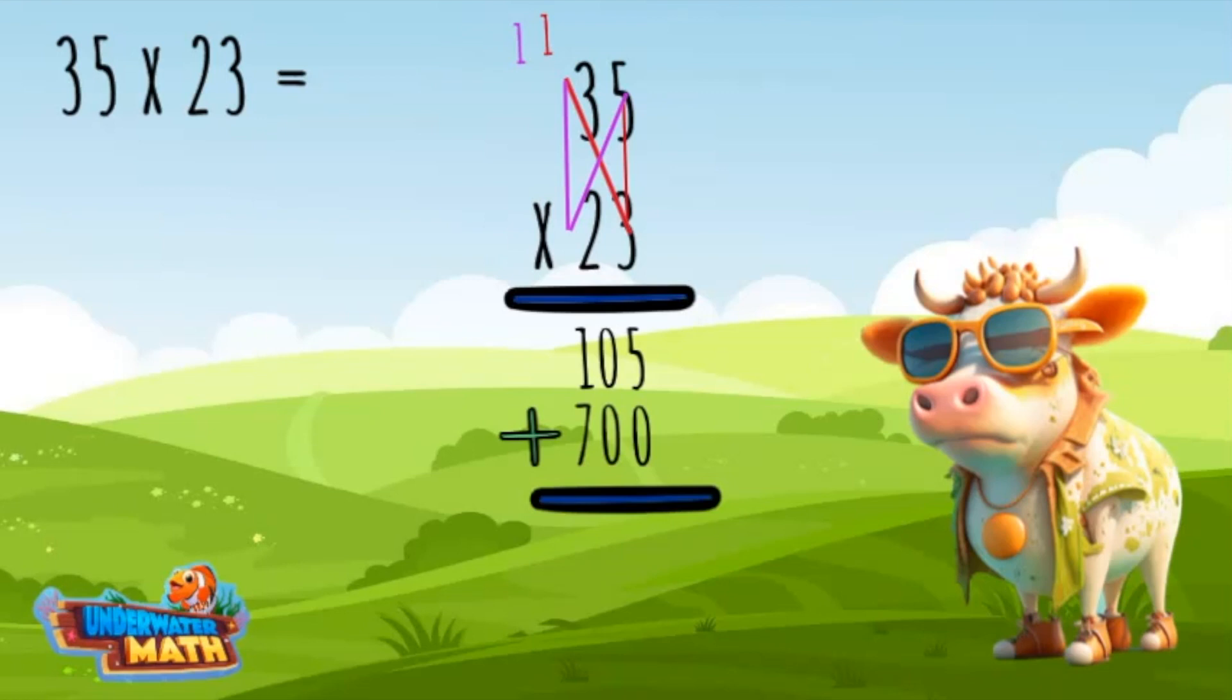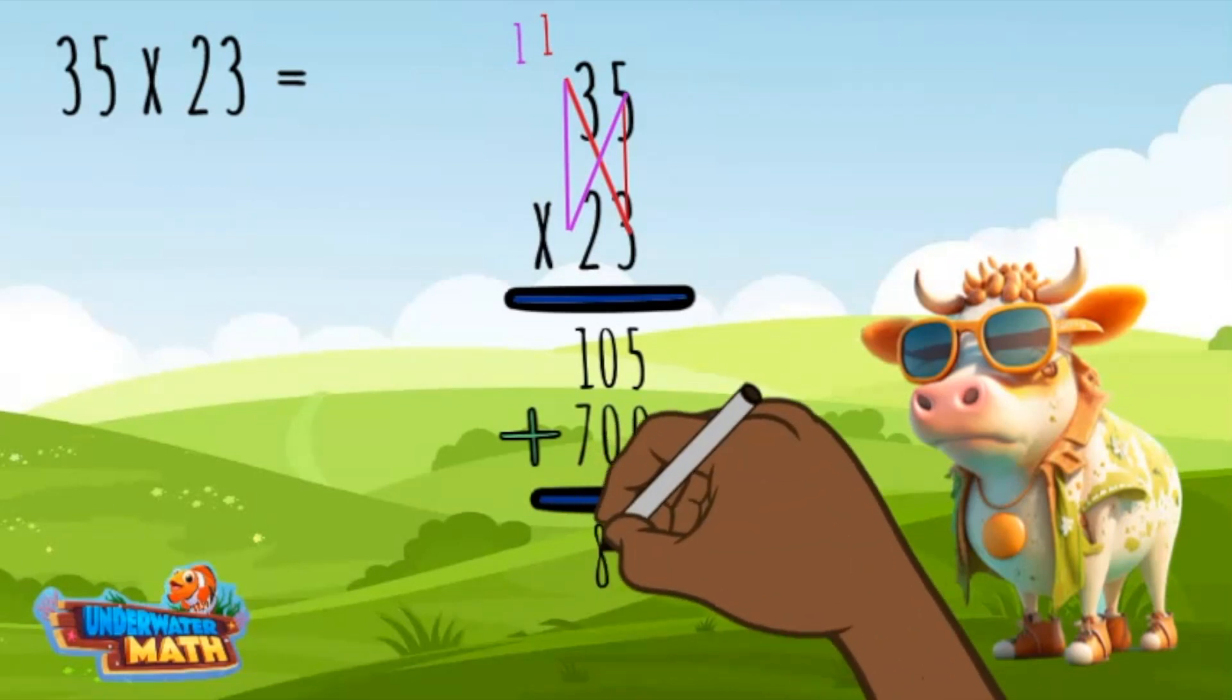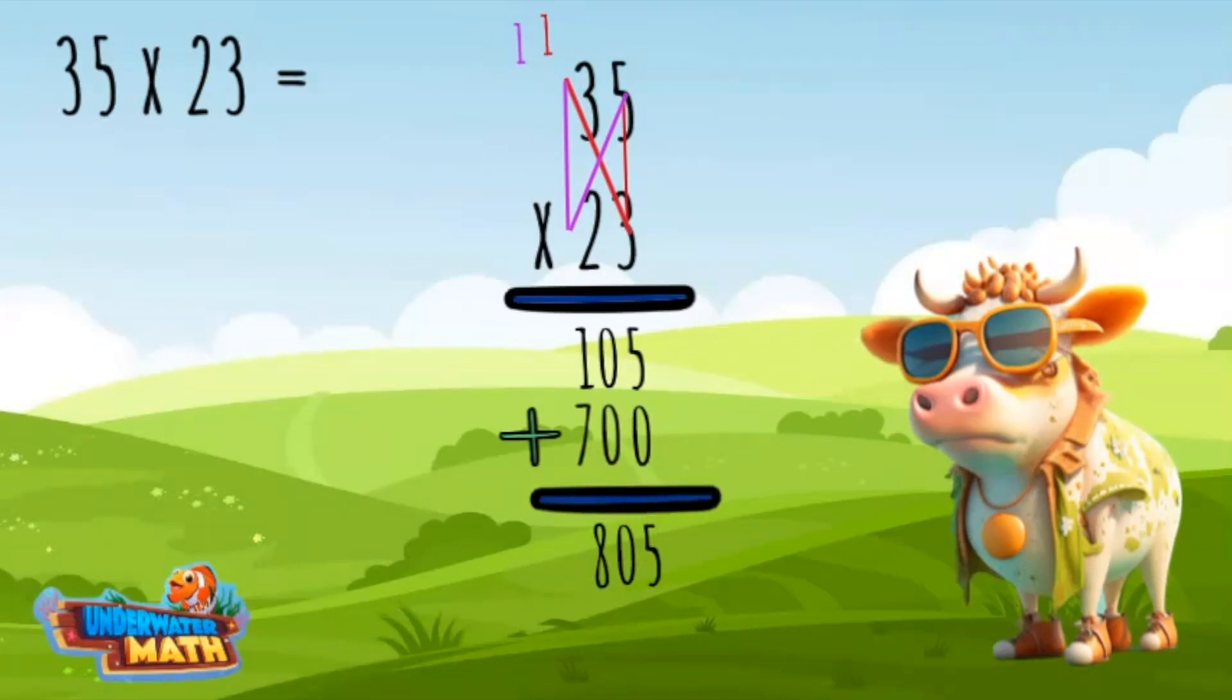The product of 35 times 23 is 805. Let's do one more example but a little faster.